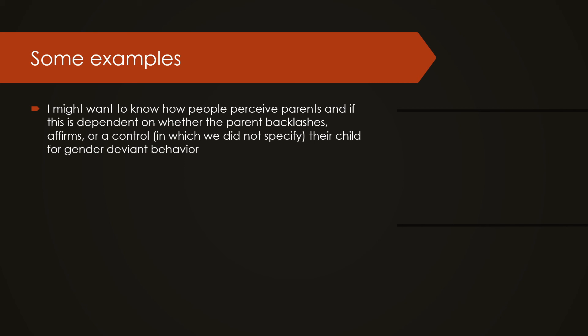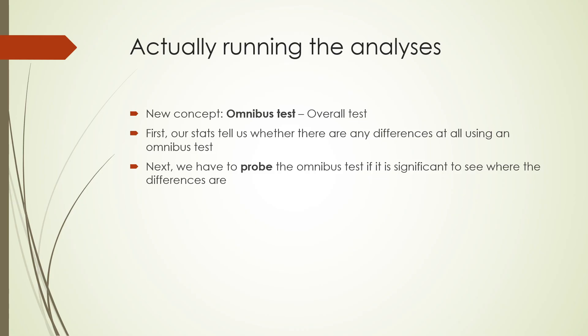The teacher thinks it's concerning that a parent's child is behaving in ways inconsistent with that child's gender role. We then manipulated whether the parent affirmed the child's behavior — saying it's not a bad thing — or backlashed their child, telling the child it's unacceptable and they shouldn't be doing it, or a control condition in which we didn't specify. We measured parent likability, parent competence, and other perceptions on a continuum. So we have three groups predicting a continuous outcome.